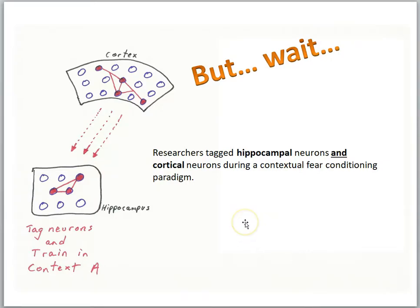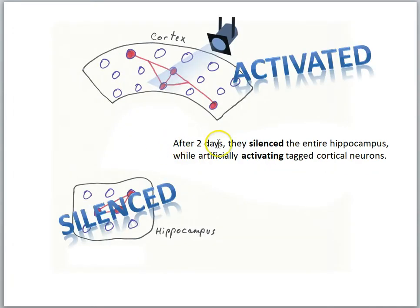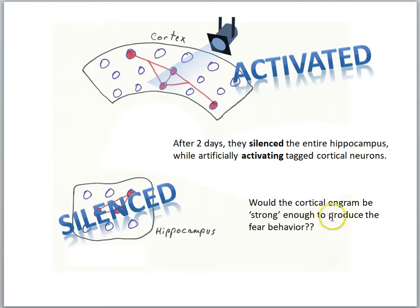Now we'll look at another study that adds a twist. Researchers again tagged the hippocampal and cortical neurons during a contextual fear conditioning paradigm, so the hippocampal cells inserted light-activating proteins and some cortical neurons did as well. After two days — a short interval — they silenced the entire hippocampus while artificially activating the tagged cortical neurons using blue light. The interesting question was whether the cortical engram would be strong enough to produce the fear behavior.